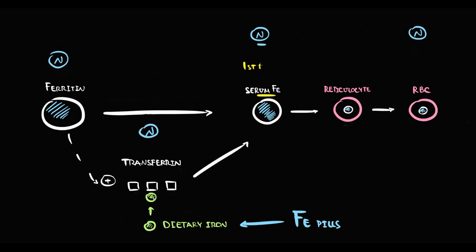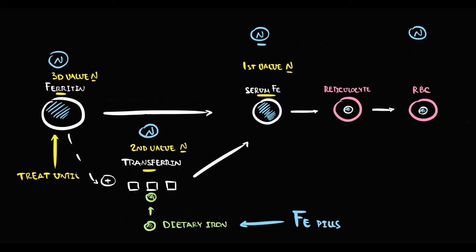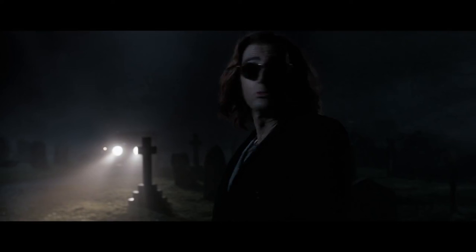So the first value that normalizes is serum iron, the second value is transferrin, and the last value that normalizes is ferritin. Therefore, we treat patients with iron deficiency until normalization of ferritin.